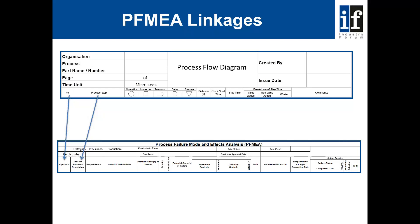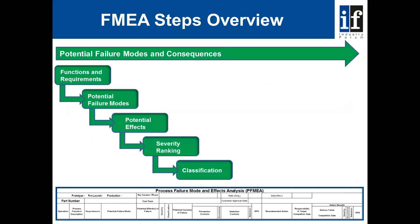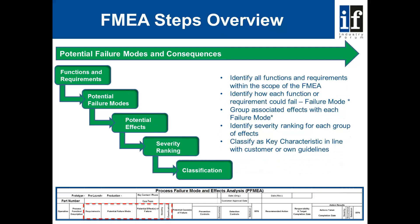The PFMEA identifies the risks and controls associated with each step of the process. When we consider how an FMEA is created, we start by considering functions and requirements, potential failure modes, potential effects, severity ranking, and then classification. We need to identify all functions and requirements within the scope of the FMEA, identify how each functional requirement could fail — this is known as the failure mode — group associated effects with each failure mode, identify severity ranking for each group of effects, and then classify as key characteristics in line with the customer's or the organization's own guidelines.